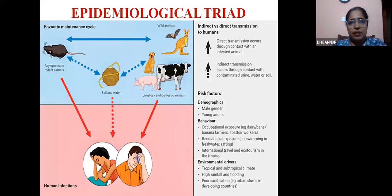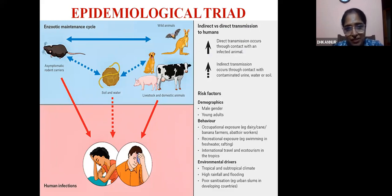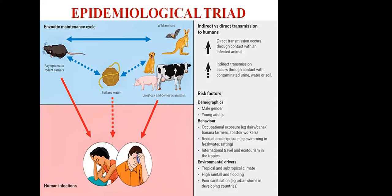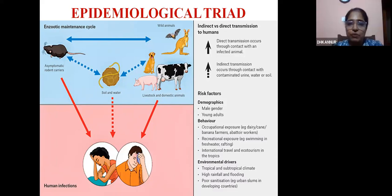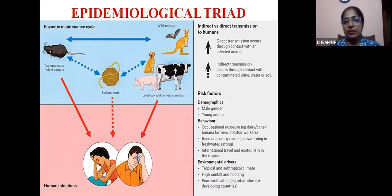This is the epidemiological triad. It's a zoonotic disease, seen in animals — animals are the reservoirs. Mainly rats, but also domestic animals. Through the urine, the spirochete is excreted, and alkaline soil provides a favorable environment for the spirochete to grow.